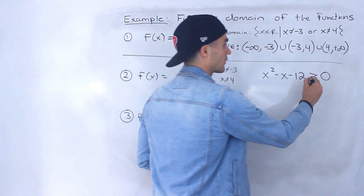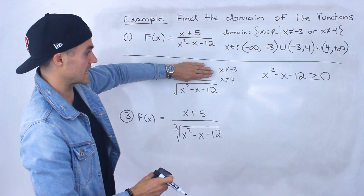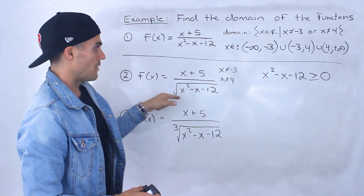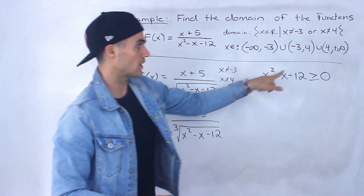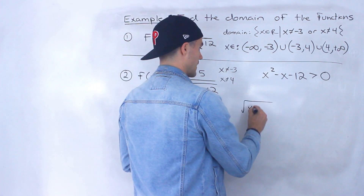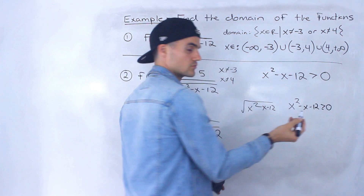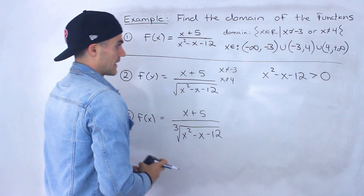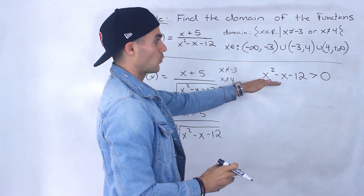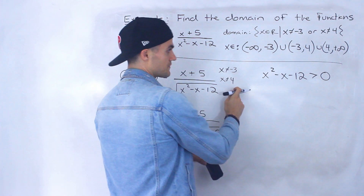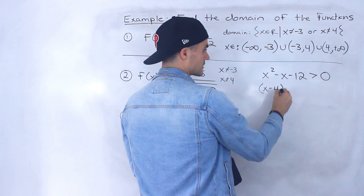If the square root expression were not in a denominator, the condition would be greater than or equal to zero, since you can take the square root of zero. But because it's in the denominator, it has to be strictly greater than zero. So we need x squared minus x minus 12 greater than zero, which factors as x minus 4 times x plus 3. This is a quadratic with x-intercepts at 4 and negative 3 that opens upward, so we need to find when it's positive.